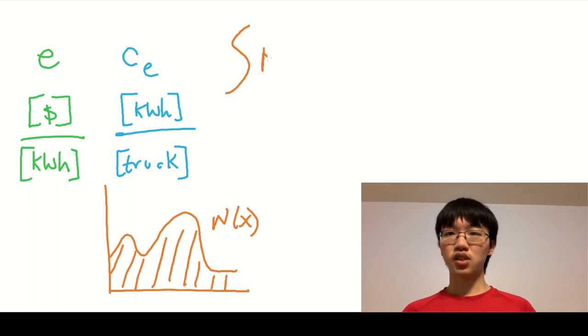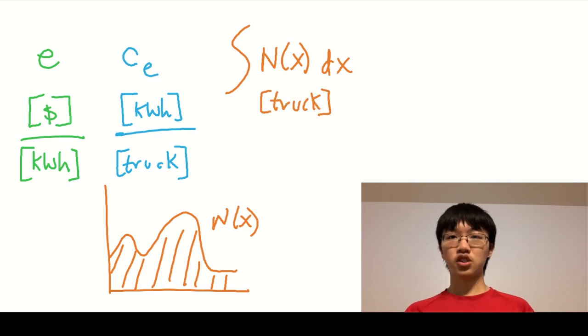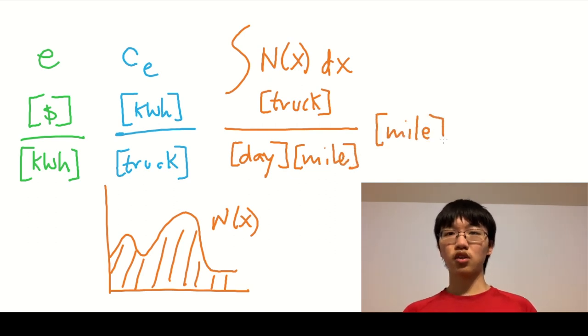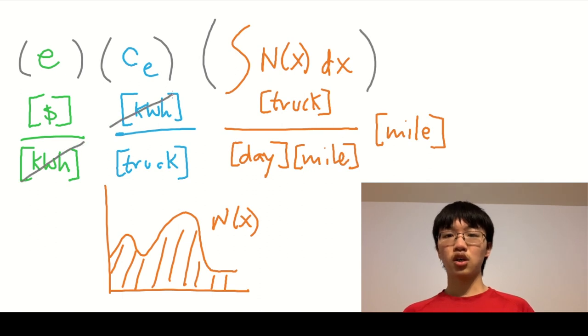Since the need function gives the number of trucks per day that need to recharge at a certain point along the corridor, integrating along the entire corridor gives us the number of trucks that need to charge along the corridor.